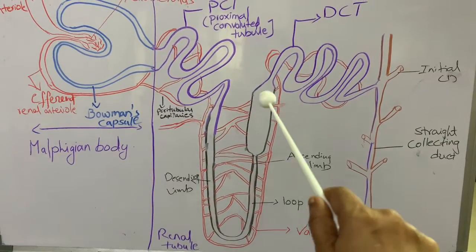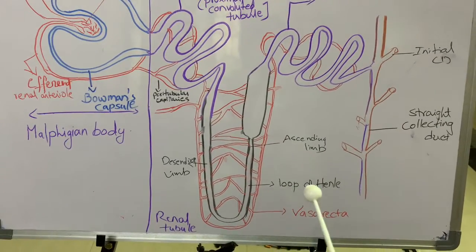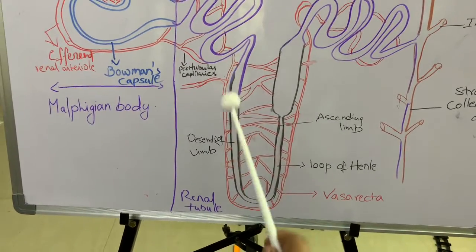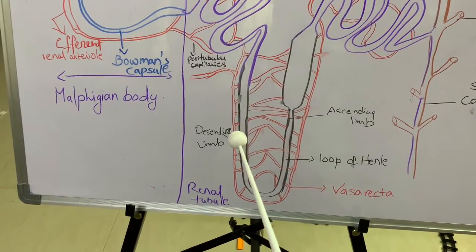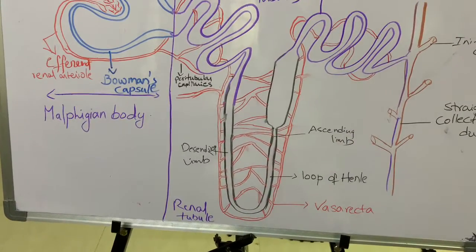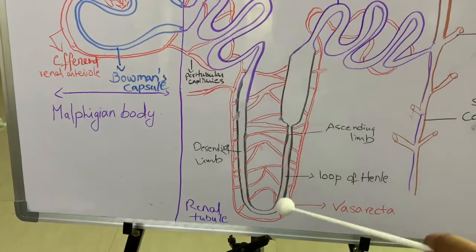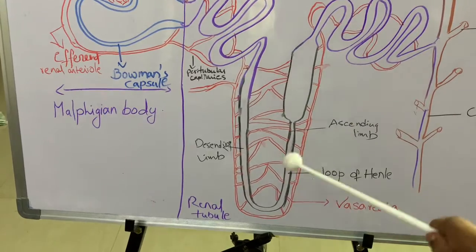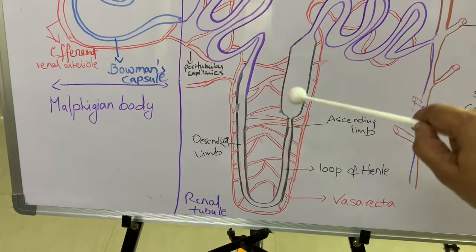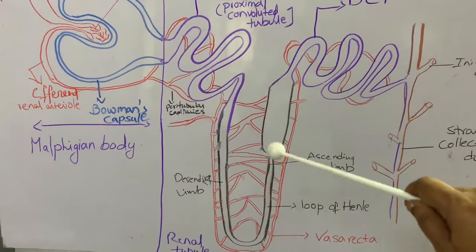The PCT continues as a U-shaped structure known as Henle's Loop, or the Loop of Henle. Henle's Loop contains two limbs: the descending limb, which goes down, and the ascending limb, which goes up. The diameter of the ascending limb varies — the proximal part is thin compared to the distal part, which is thick. This variation is useful for the filtration process.